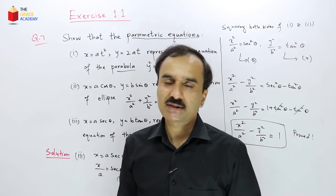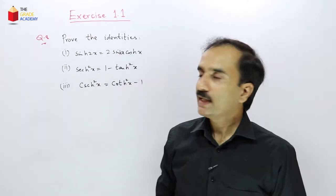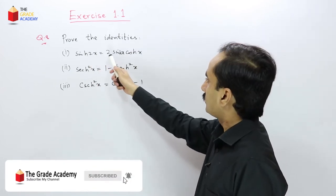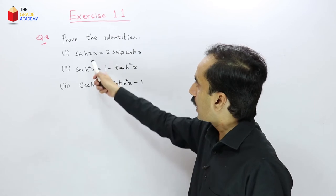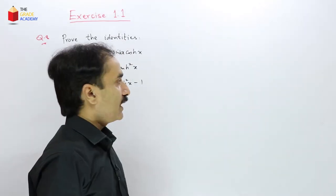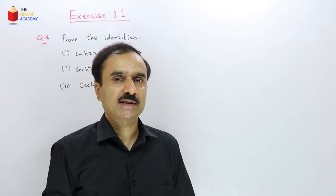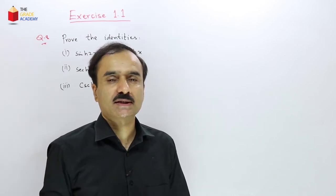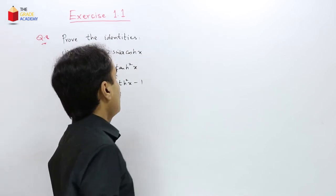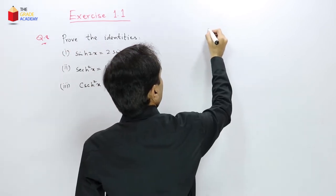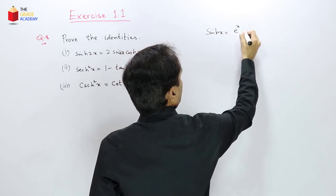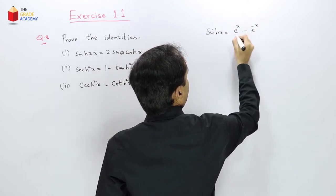That was question number 7. Now question number 8: prove the hyperbolic identities. These involve hyperbolic functions discussed in the previous lecture: sinh(x) = (eˣ − e⁻ˣ)/2 and cosh(x) = (eˣ + e⁻ˣ)/2.